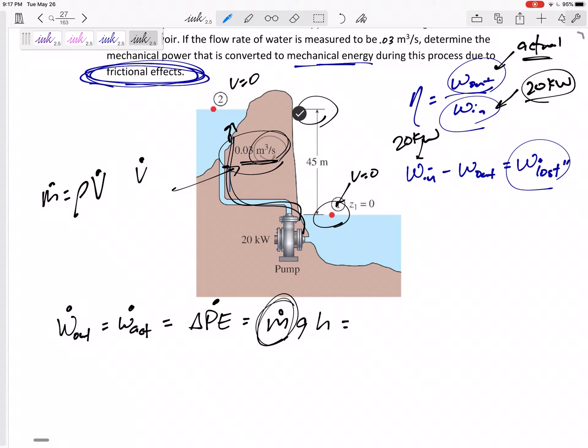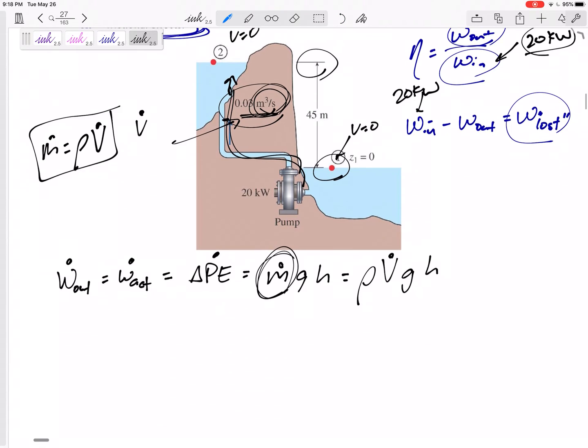The units would help us out or be a red flag to us. But that equation might kind of be on our formula sheet there if you want to put that on your formula sheet. So I'm going to change this to rho V dot G H. So W out.